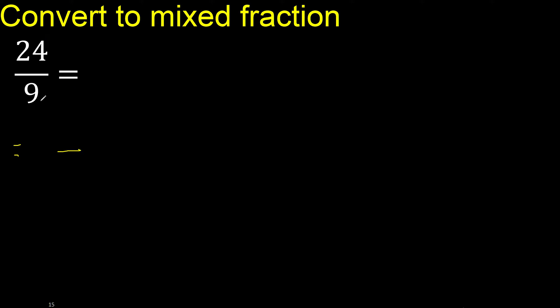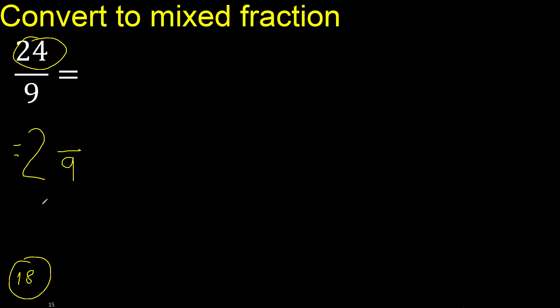First, the same number here: 9. 9 multiplied by which number is nearest to 24 but not greater? 9 multiplied by 3 is 27, which is greater than 24. 9 multiplied by 2 is 18, which is not greater. 24 minus 18 is 6 remainder.